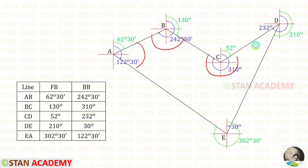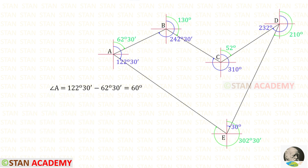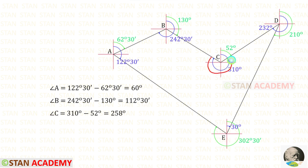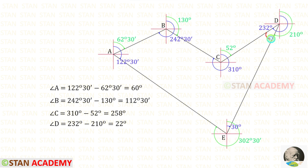Now we are going to find the interior angles. For the interior angle at station A, we subtract one bearing from the other to get 60 degrees. For the interior angle at station B, we subtract the relevant bearings to get 22 degrees. For station E, we subtract the relevant bearings and also get 22 degrees.